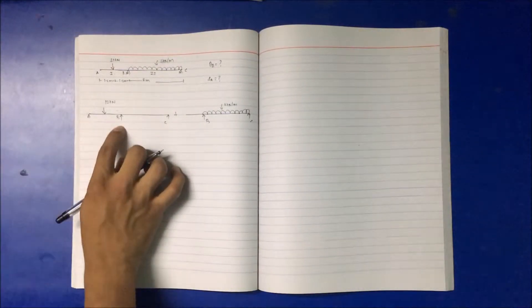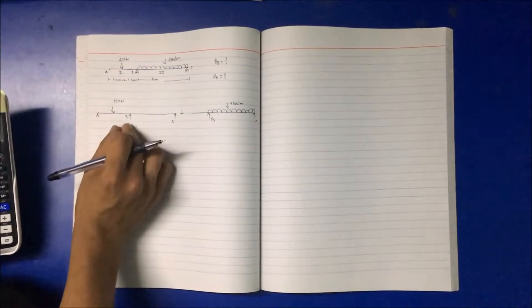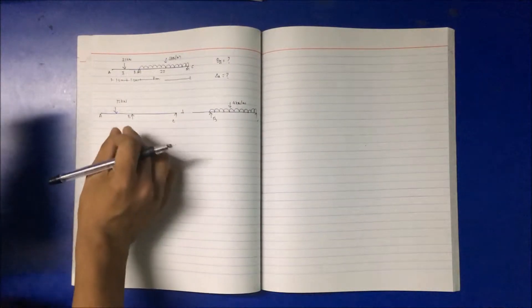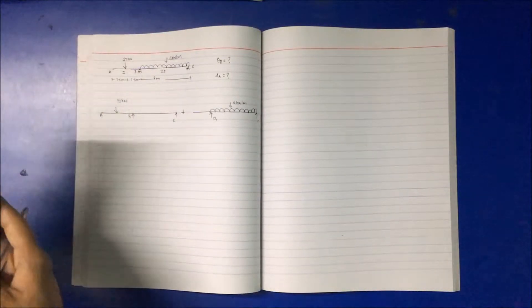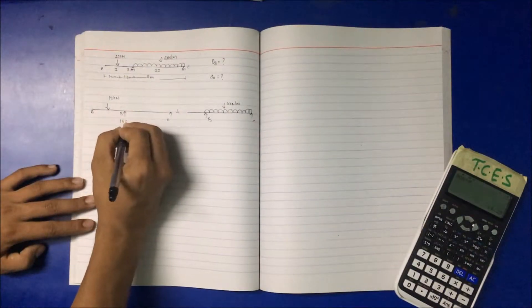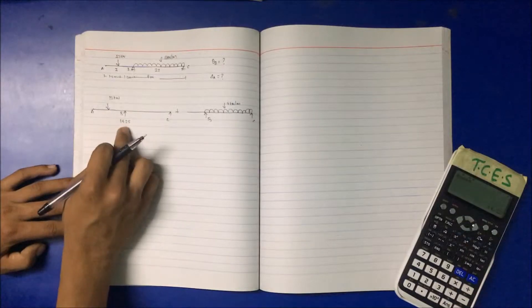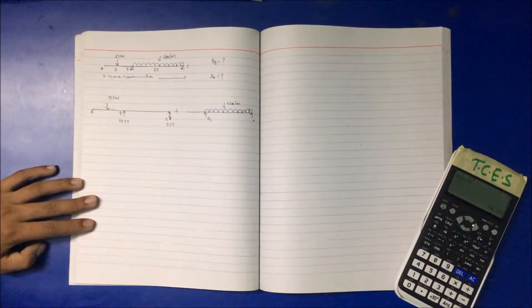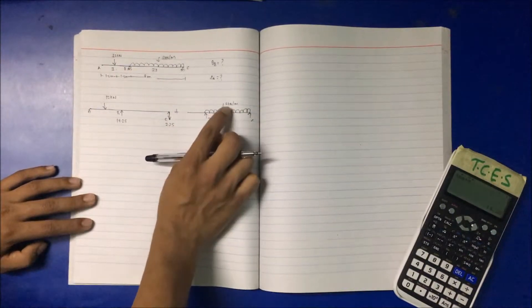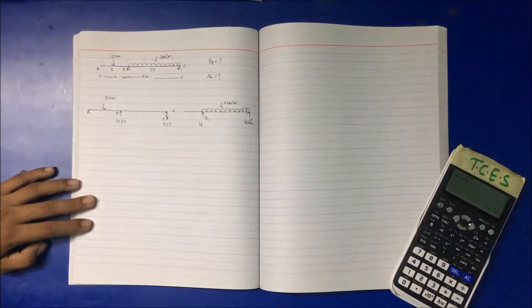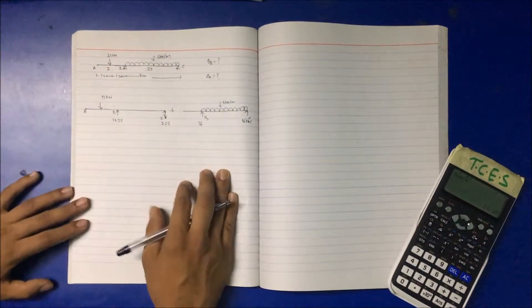To calculate reaction at B and reaction at C: with 12 kilonewton, 1.5 m, and span 8 m — 12 into 1.5, plus 9.5, divided by 8 gives 14.25 kilonewton upward. To balance, the downward reaction is 2.25 kilonewton. For the simply supported beam with UDL: 4 into 8 is 32, giving reactions of 16 and 16 kilonewton. These are the support reactions.